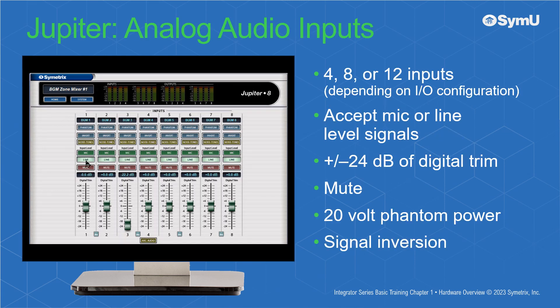As mentioned earlier, the number of inputs will vary depending on configuration: 4, 8, or 12. Jupyter analog audio inputs accept mic or line level signals, have plus or minus 24 dB of digital trim, mute, 48 volt phantom power, and signal inversion.